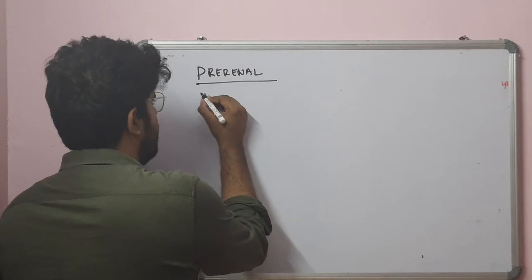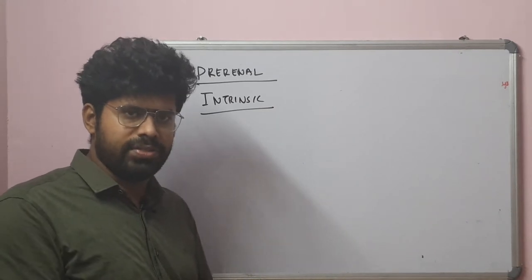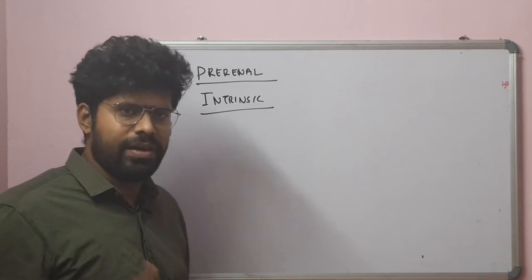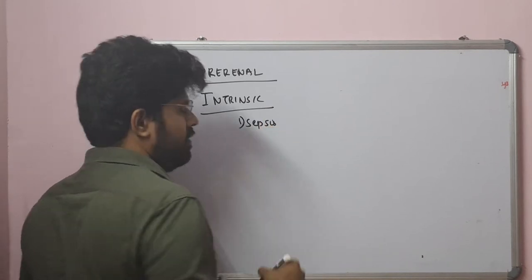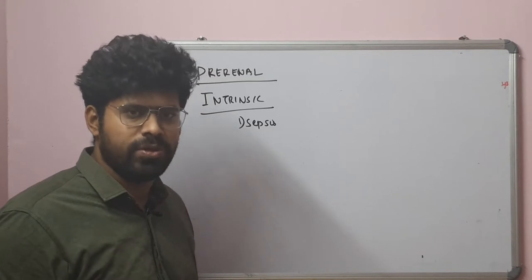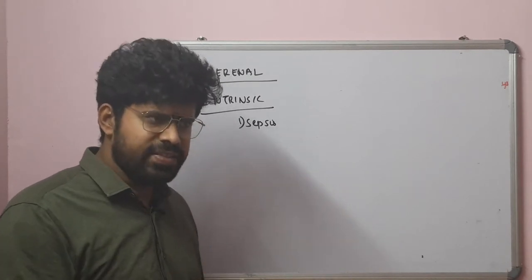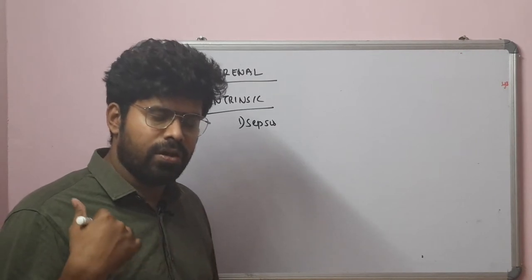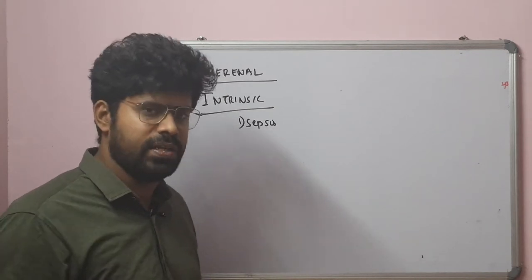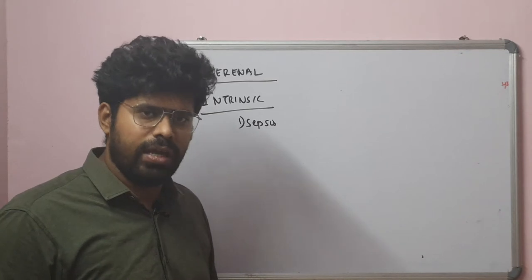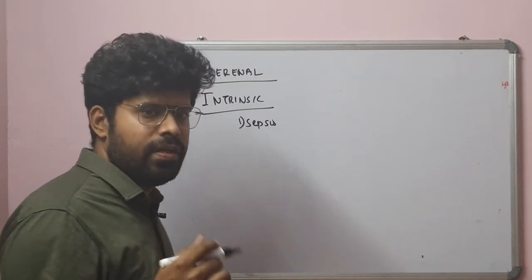Now we will discuss intrinsic renal failure. As discussed, intrinsic causes are classified into glomerular, tubular, interstitial, and vascular. The most important intrinsic cause is sepsis. Because of sepsis, there is a systemic inflammatory response with increased bacteria in the blood and increased cytokine production. These cytokines cause renal efferent vasodilation. Septic organisms can also directly injure the proximal convoluted tubule, and antibiotics used in sepsis can worsen AKI. Sepsis can be secondary to pneumonia or urinary tract infection, which are the most important causes.